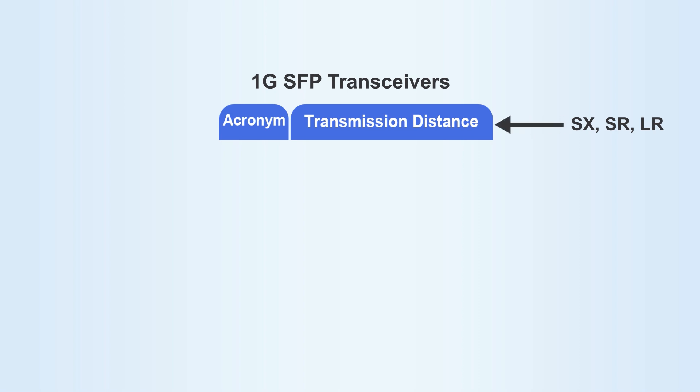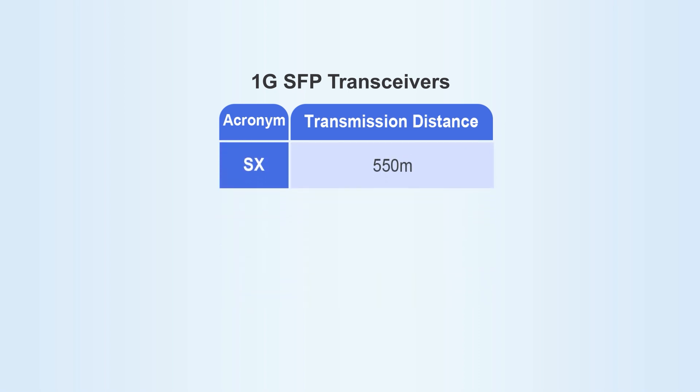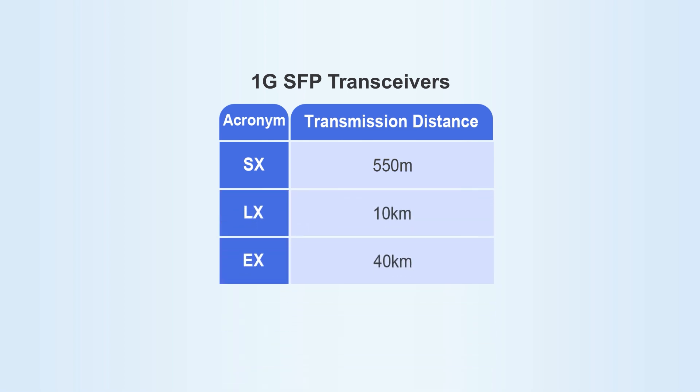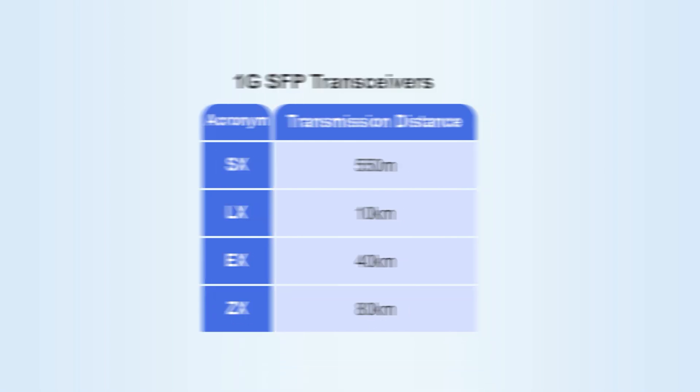In addition to the form factor, what about acronyms like SX, SR, and LR? This refers to the transmission distance. For example, for a 1G SFP optical module, SX refers to a transmission distance of 550 meters, LR refers to 10 km, ER refers to 40 km, and ZX refers to 80 km.